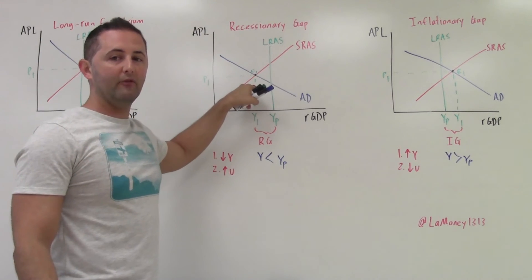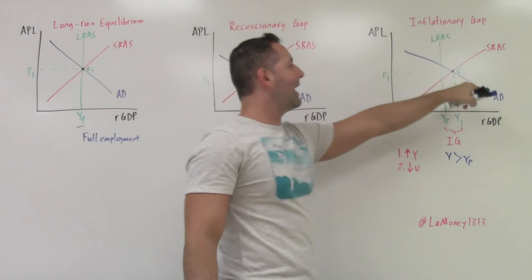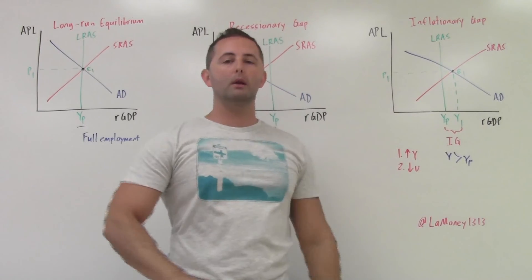Here, unemployment is greater than full employment. It is above the natural rate. We have high unemployment. And in an inflationary gap, we have low unemployment.